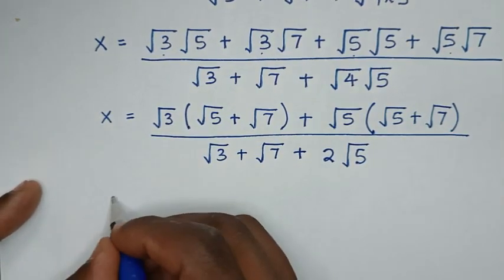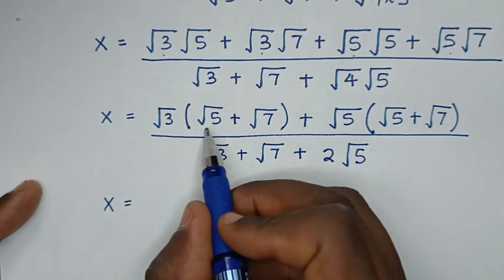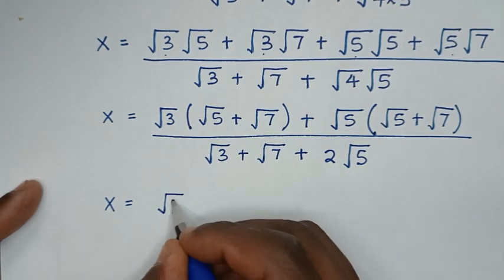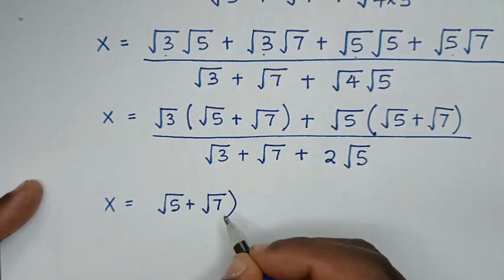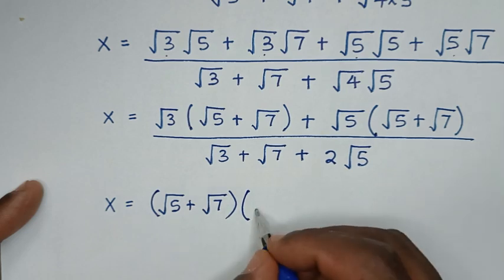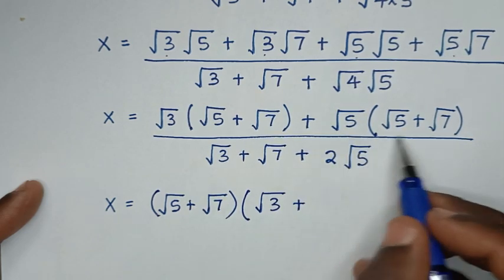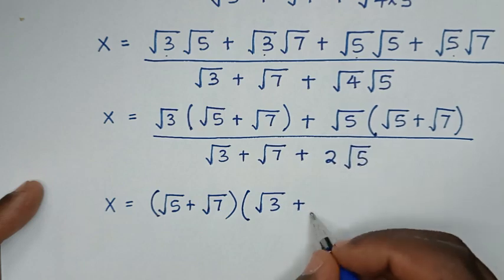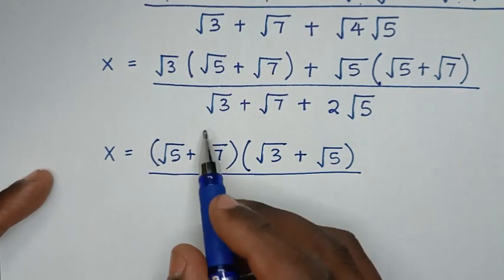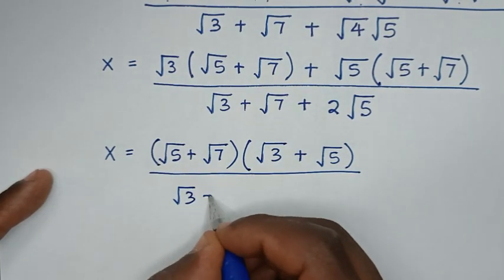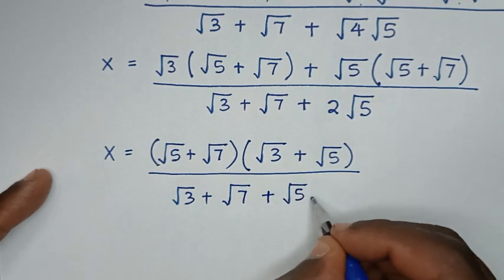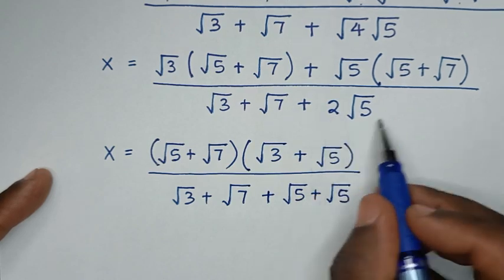Then in the next step, x equals — inside the bracket, √5 + √7 is common, so we take (√5 + √7) out of the bracket. This divided by (√5 + √7) is √3. Plus this divided by this is √5. Then over √3 + √7 + 2√5, which is same as √5 + √5, giving 2√5.